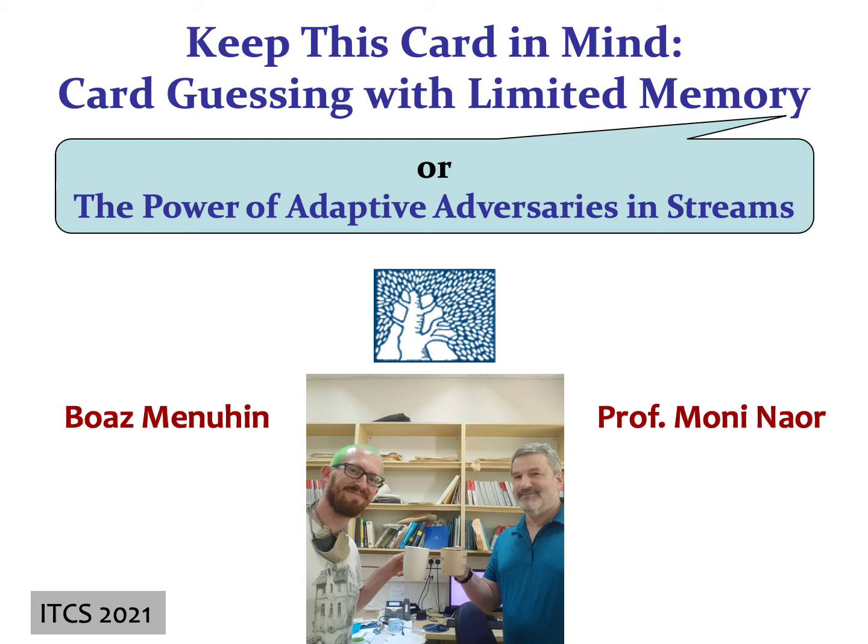Hello everyone, my name is Boaz Minyohin and I'll be presenting the work on card guessing with limited memory, that shows the power of adaptive adversaries in streams. This is a joint work with Moni Naol from Weizmann Institute.